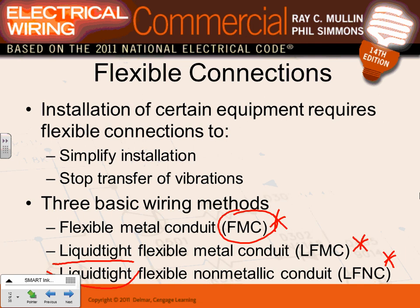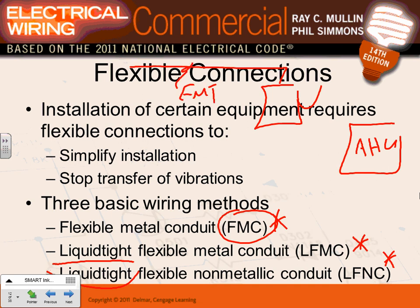Highly corrosive environments are typically underground with chemicals eating into metal, or in chemical plants where chemical vapors eat into steel. For those environments, liquid-tight flexible non-metallic conduit is your conduit of choice. The typical installation: here's your air handling unit, you bring your EMT conduit to a disconnect, and from the disconnect you flex it into the air handling unit. If it's outside - which most rooftop units are - use liquid-tight flexible metallic conduit, just like the outside unit of your air conditioning.